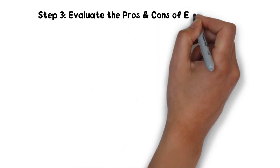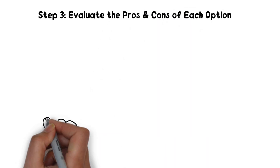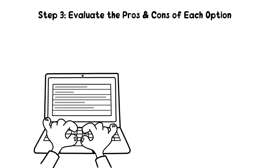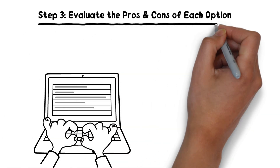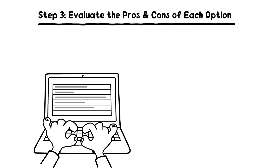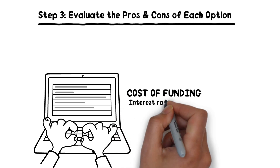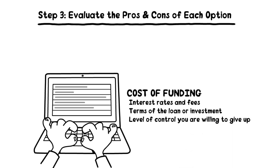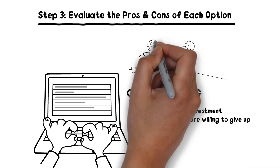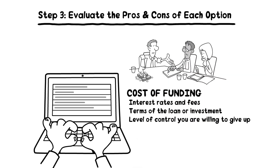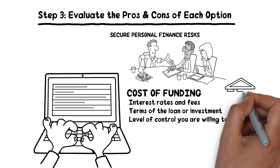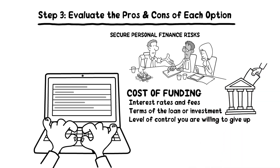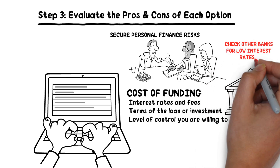Step 3: Evaluate the pros and cons of each option. Once you have identified potential sources of funding, it's important to carefully evaluate the pros and cons of each option. Consider factors such as the cost of funding, including interest rates and fees, the terms of the loan or investment, and the level of control you are willing to give up in exchange for funding. For example, personal savings may not have any upfront costs, but it does put your personal financial stability at risk. On the other hand, a loan from a bank may have lower interest rates and more flexible terms, but it may also require collateral or a personal guarantee.